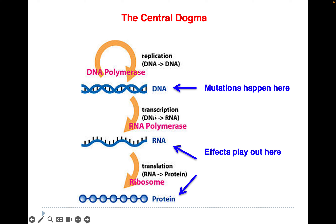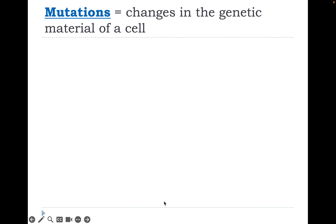After mutation occurs, transcription of that DNA into RNA by RNA polymerase produces an RNA strand. When that RNA is translated at the ribosome, we see a protein. Even though mutations happen upstream in DNA, we don't often see the impact until we get to the RNA molecule or more likely the protein that results. Structure determines function — if the structure changes, the function may change too. Mutations are changes in the genetic material of a cell, meaning the DNA.